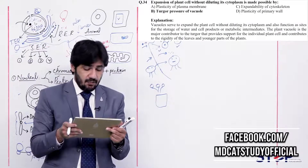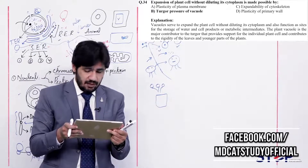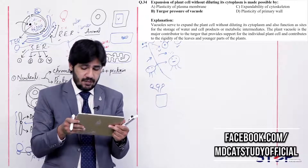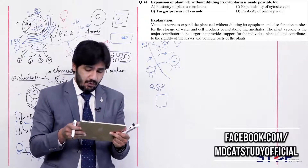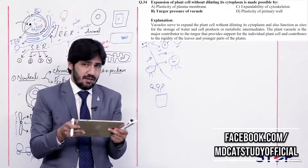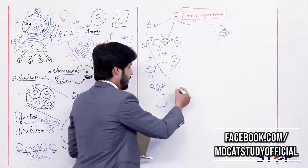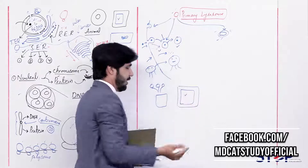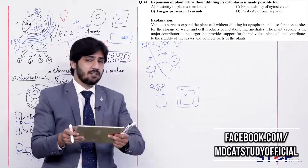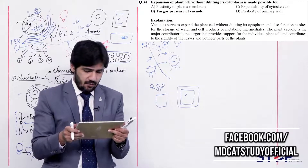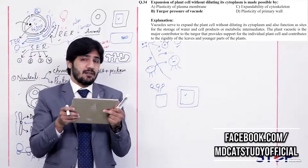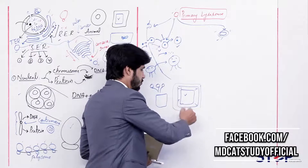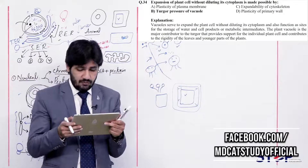Question 34: Expansion of plant cells without diluting its cytoplasm is made possible by (alpha) plasticity of plasma membrane, (beta) turgor pressure of vacuoles, (charlie) expandability of the cytoskeleton, (delta) plasticity of the primary wall. In plant cells, the large central vacuole causes the cell to take in water and expand without diluting the cytoplasm. The cell wall has the character of plasticity, allowing it to expand due to the turgor pressure of vacuoles. So the right answer is beta — turgor pressure of vacuoles.